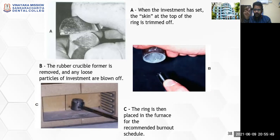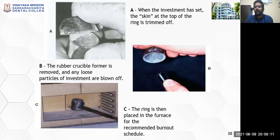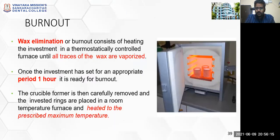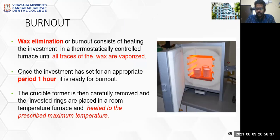Burnout means complete removal of the wax that was used for your wax pattern, sprue, and reservoir — so the space is created for incorporation of the molten metal. Burnout or wax elimination consists of heating of the investment in a thermostatically controlled furnace where all traces of wax are completely vaporized — not even a single particle should remain clogged inside the investment space. Once the investment has set for an appropriate period of one hour after pouring, it is ready for burnout. The crucible former is carefully removed and the invested ring is placed in a room-temperature furnace.